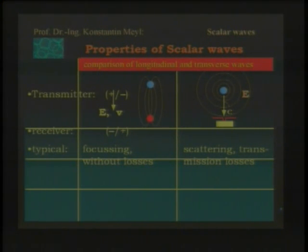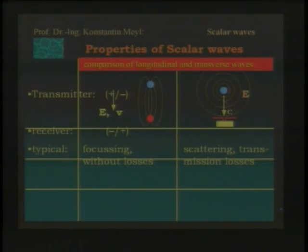This is what Tesla said — that we have no losses. Everything is collected at the receiver. It could be even more if you collect from another transmitter in your environment.